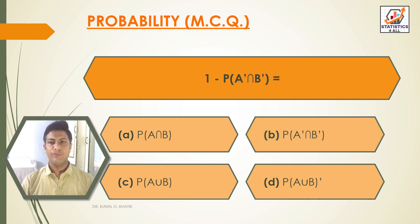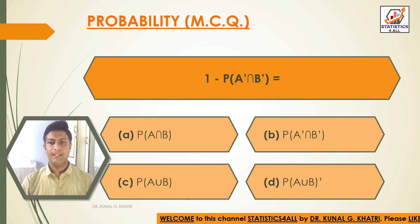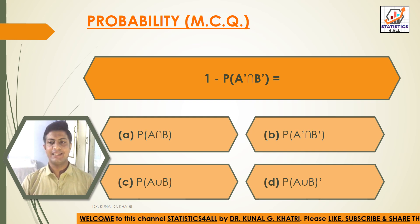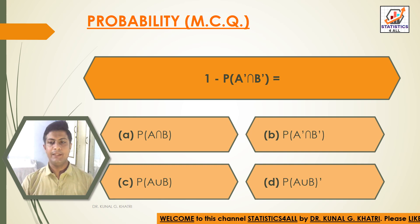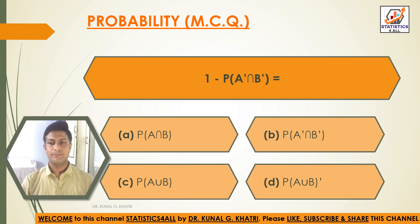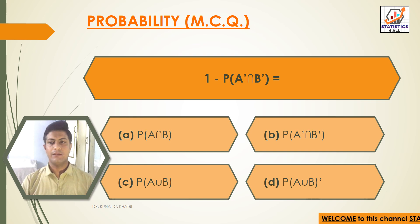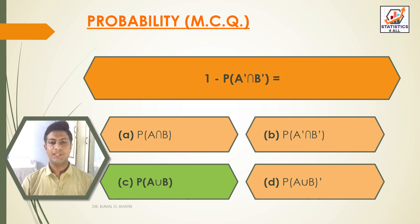Question 13: 1 − P(A'∩B') equals? Option A: P(A∩B). Option B: P(A∪B). Option D: P(A∪B)'. Answer: Option C — P(A∪B) = 1 − P(A'∩B').